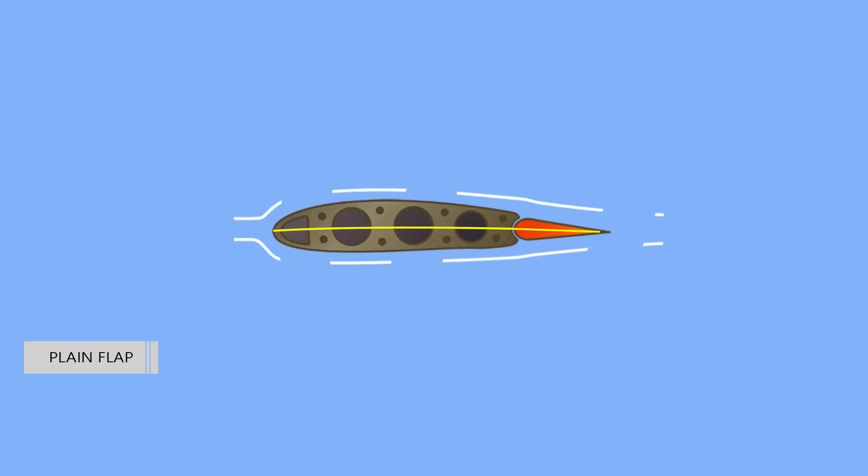Plain flaps form the trailing edge of the wing when the flap is in the retracted position. The airflow over the wing continues over the upper and lower surfaces of the flap, making the trailing edge of the flap essentially the trailing edge of the wing. The plain flap is hinged so that the trailing edge can be lowered. This increases wing camber and provides greater lift.